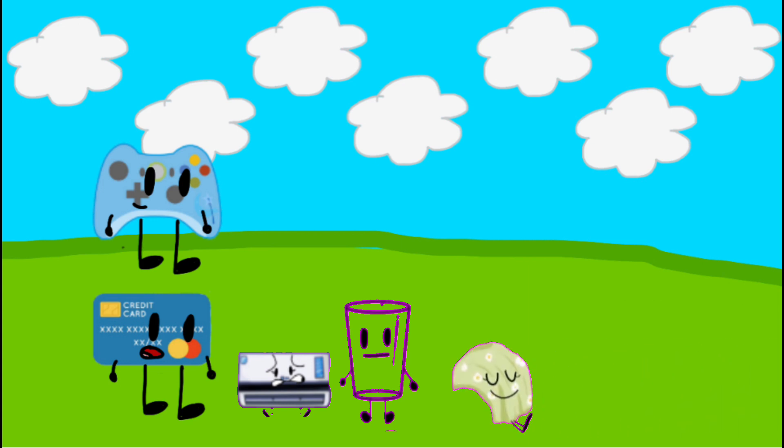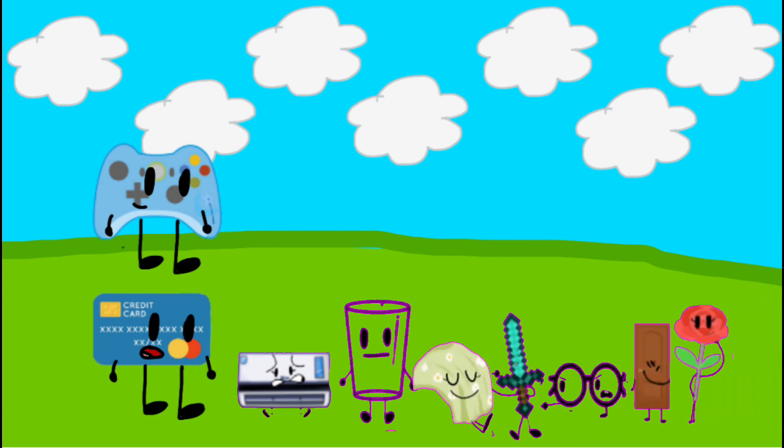Alright, so Controller and Credit Card will be the team captains. Let's start with Credit Card. I'll pick Acey, Glassy, Lanket, Shorty, Glasses, Dory, Rose, Sandwichy, Oreo, and Diamond Deed.